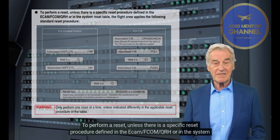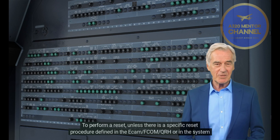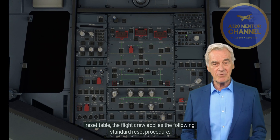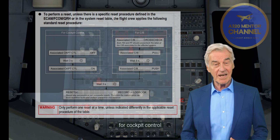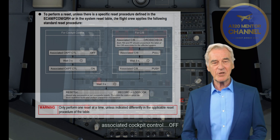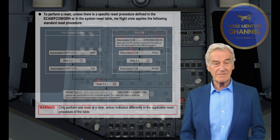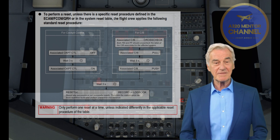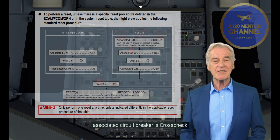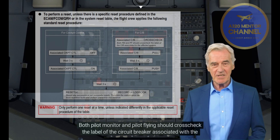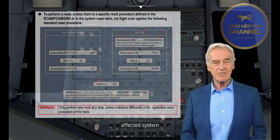To perform a reset, unless there is a specific reset procedure defined in the ECOM, FCOM, QRH, or in the system reset table, the flight crew applies the following standard reset procedure. For cockpit control: associated cockpit control off, wait 3 seconds, associated cockpit control on. For circuit breakers: associated circuit breaker is cross-checked. Both pilot monitoring and pilot flying should cross-check the label of the circuit breaker associated with the affected system.